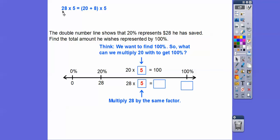28 is the same as 20 plus 8. So 5 times 20 is 100. And then 5 times 8 is 40. So we get 100 plus 40, which is 140.